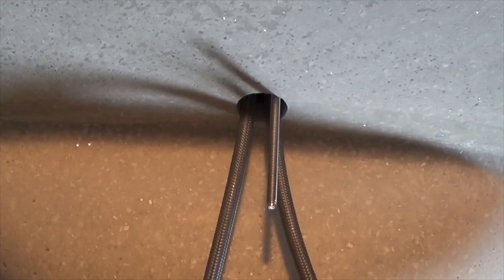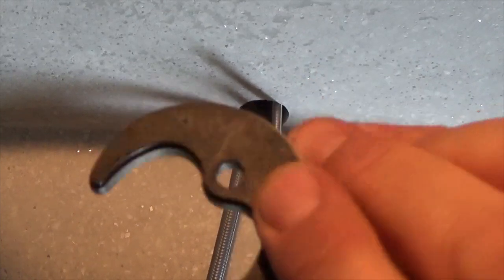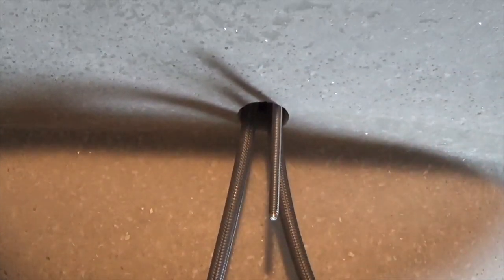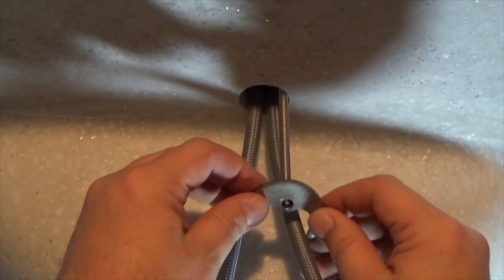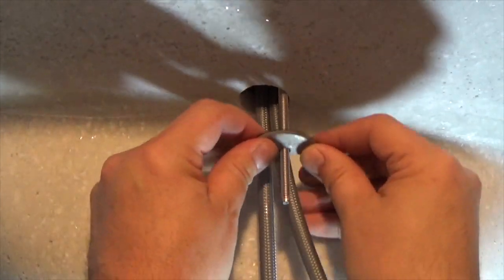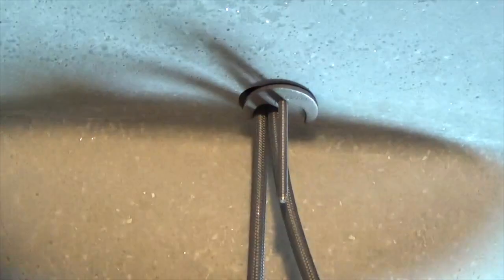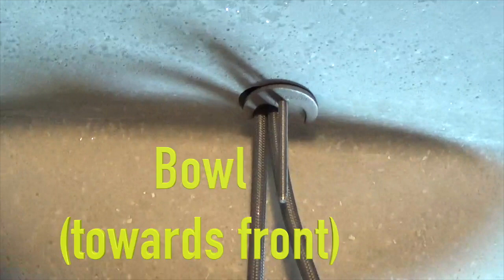Next, go underneath and install the mounting washer with the rubber side up. This is done by threading it onto the mounting stud. Note the orientation of the washer. The open side faces forward, that is, it faces the bowl.